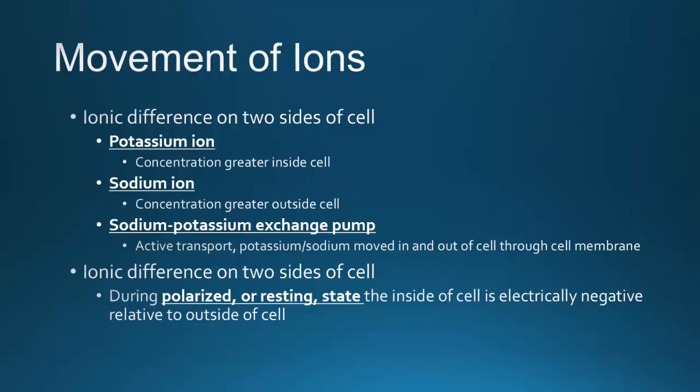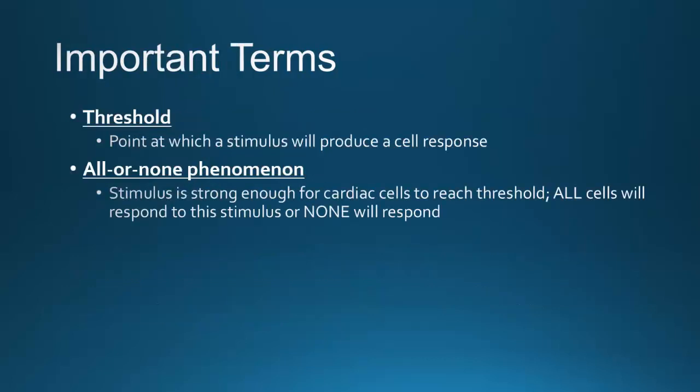During the polarized or resting state, the inside of the cell is electrically negative relative to the outside. In order for the cell to depolarize, you've got to have a movement of ions — sodium has to come into the cell and potassium has to go out. Threshold is the point at which a stimulus will produce a cell response.